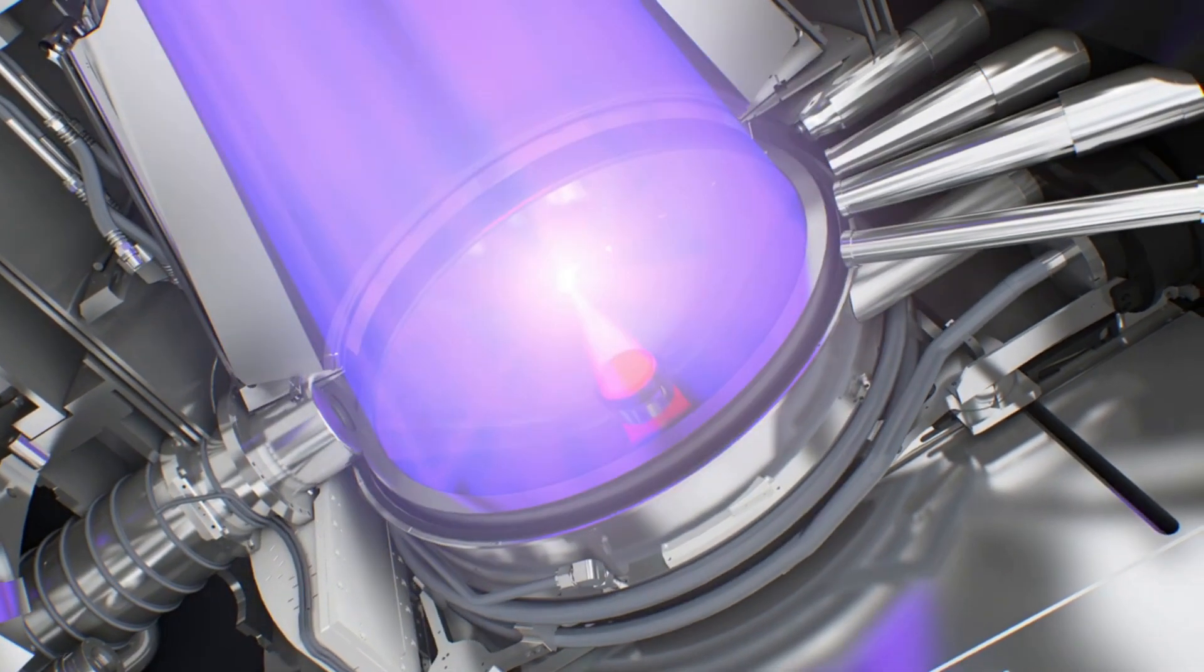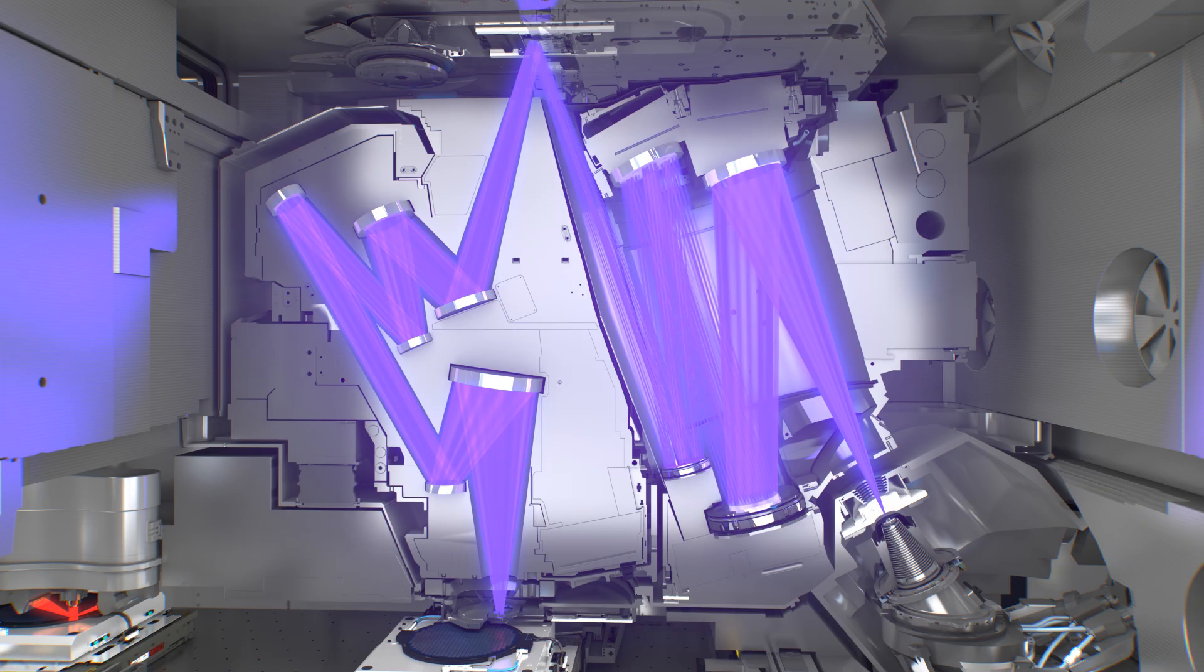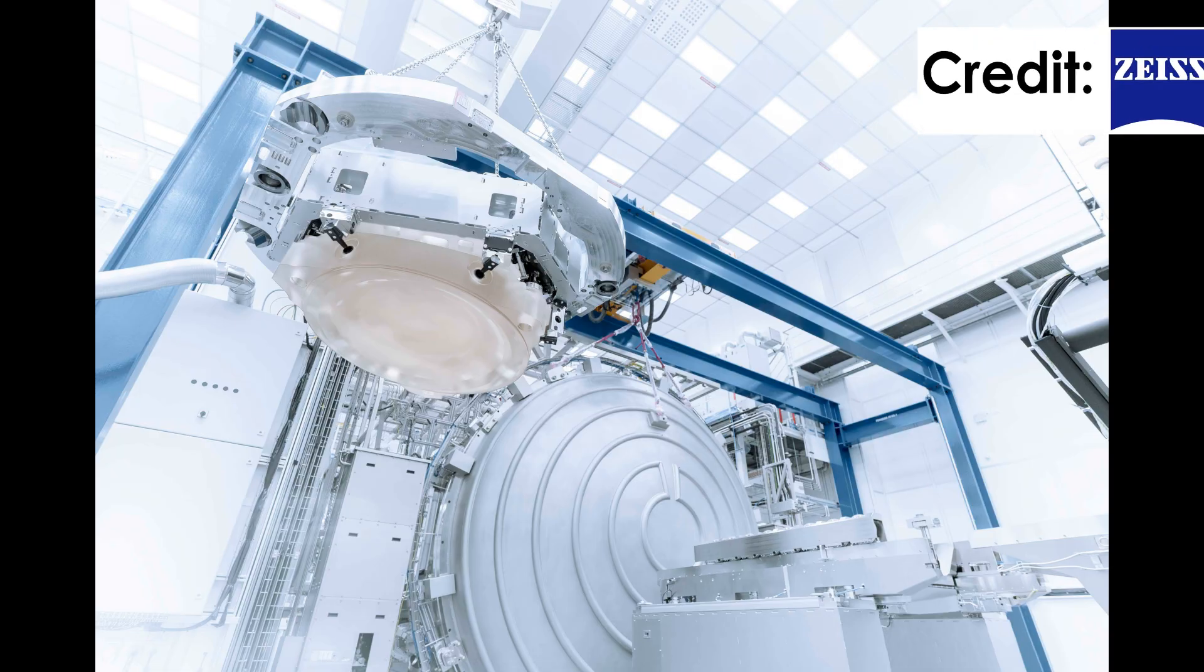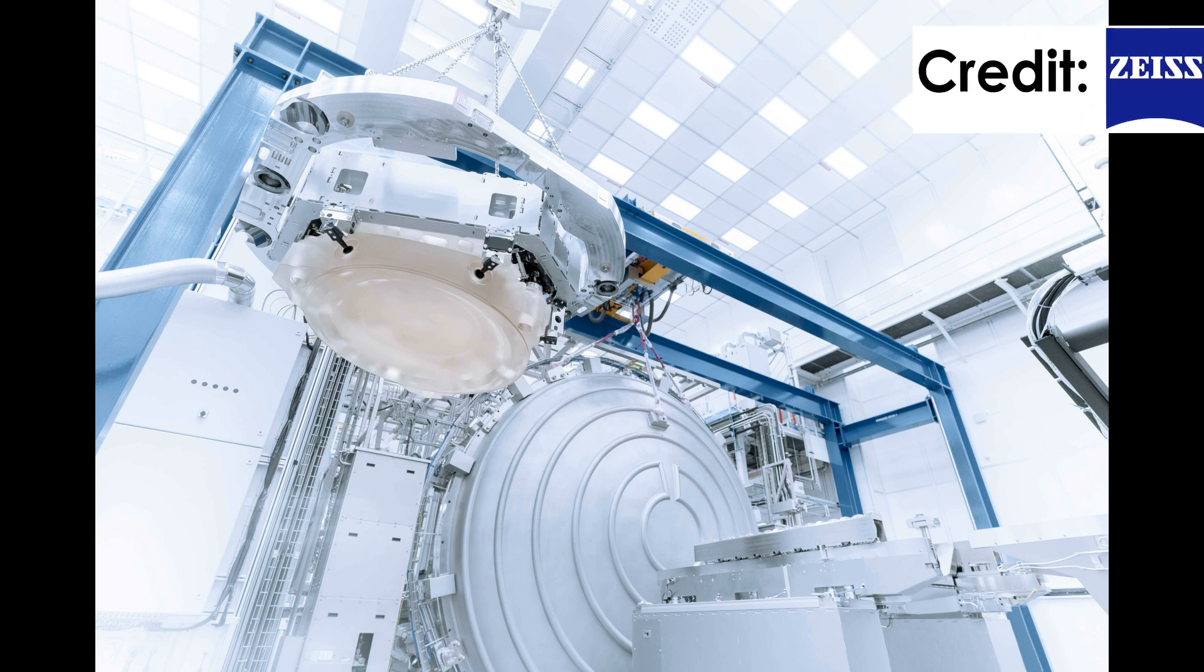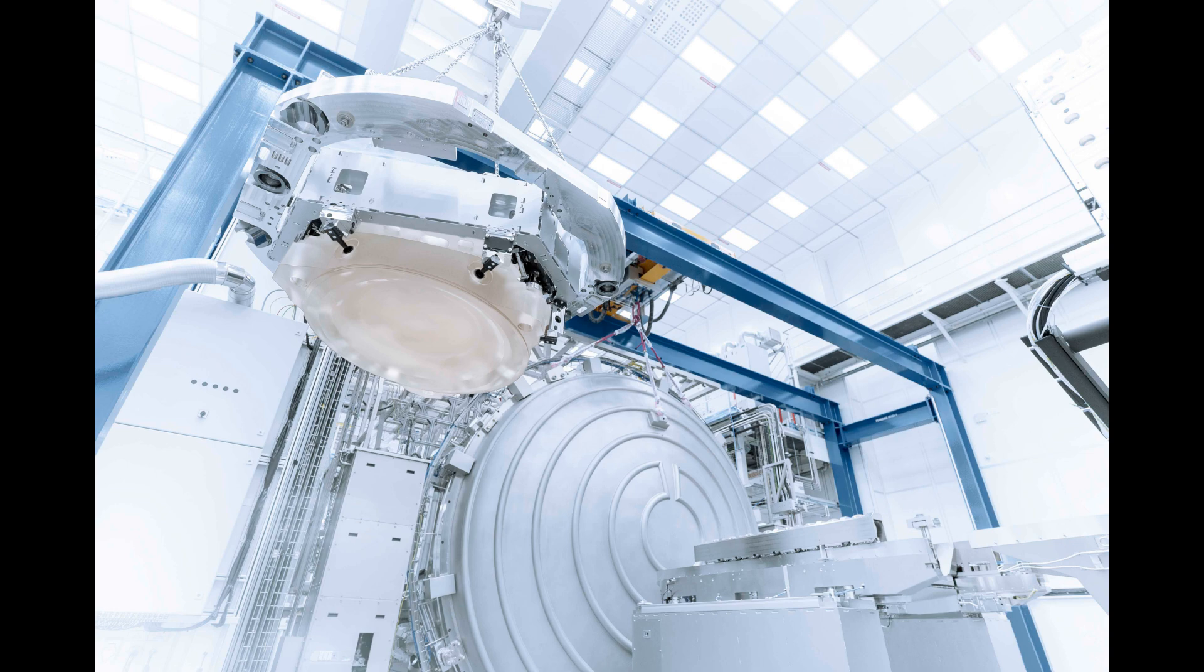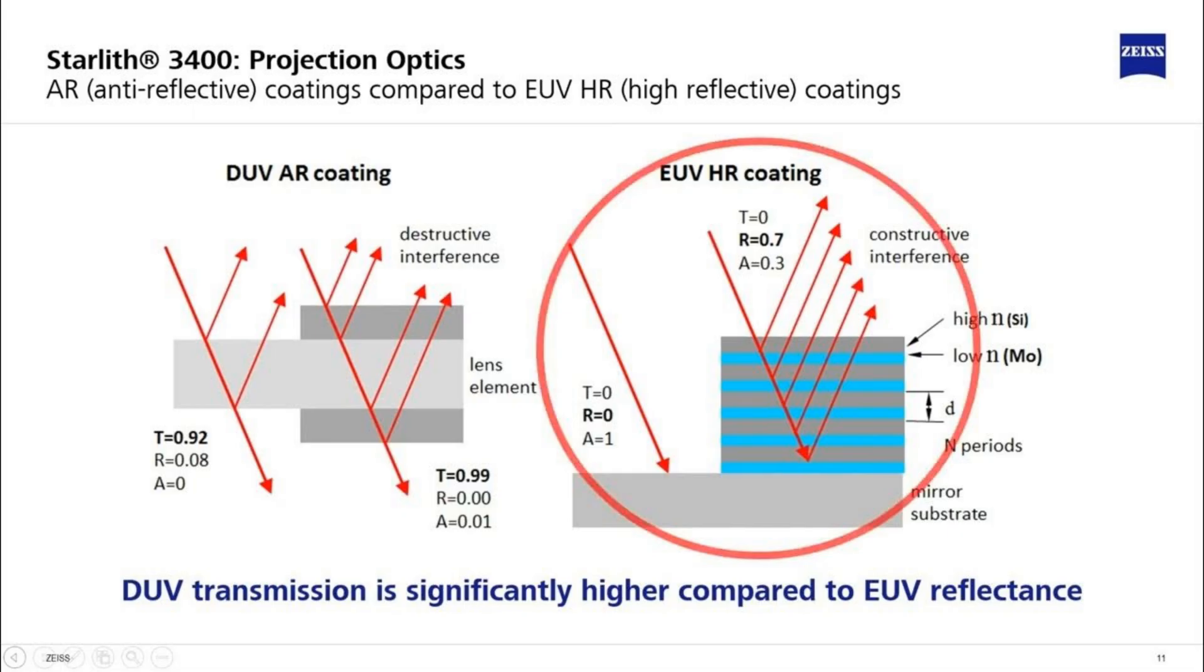Producing this extreme ultraviolet light is just the beginning of this challenging new process. The first issue is creating mirrors that can reflect the light. Since we are close to the limit of what can be reflected, the mirrors we use must be incredibly smooth. A normal mirror is nowhere near smooth enough to reflect a usable amount of light. In order to overcome this problem, Zeiss, a lens company in Germany, has created the world's flattest mirror. They did this by coating the mirror in extremely thin layers of silicon and molybdenum.